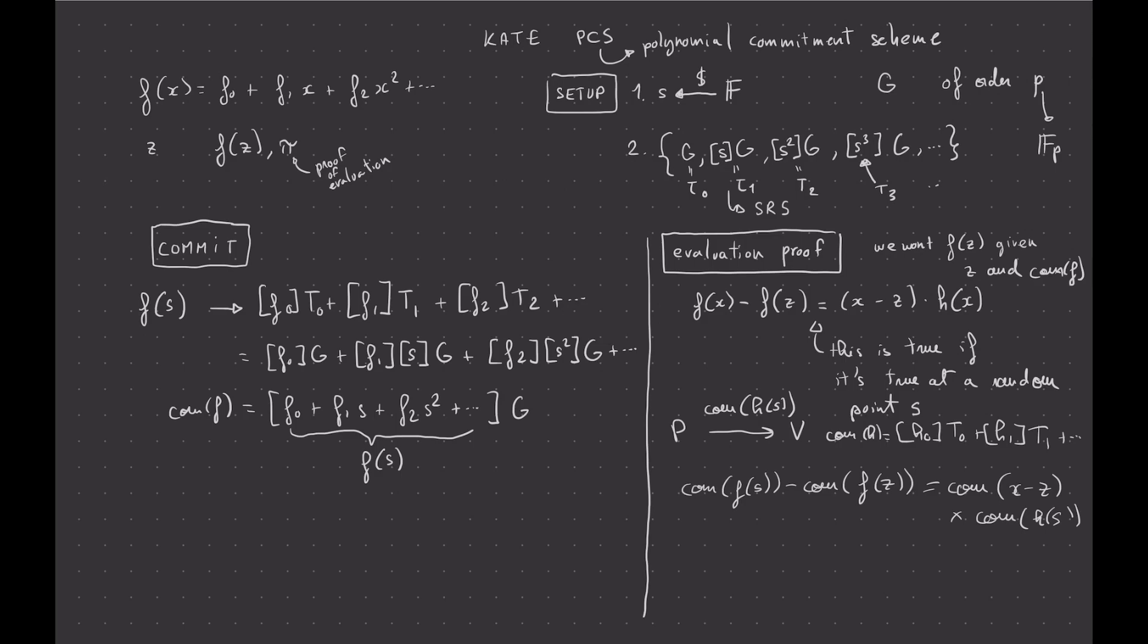Now, hopefully that makes sense. We have exactly our equation that we had here above, except that we're checking it hidden in a group, hidden by the group element G. So we're checking things inside commitments. So basically, we're using commitment(a) equals commitment(b) only if, or is equivalent to, a equals b. And the other thing we're using is the homomorphic or the additive homomorphic property of the commitments, which is that commitment(a) plus commitment(b) equals commitment(a plus b).